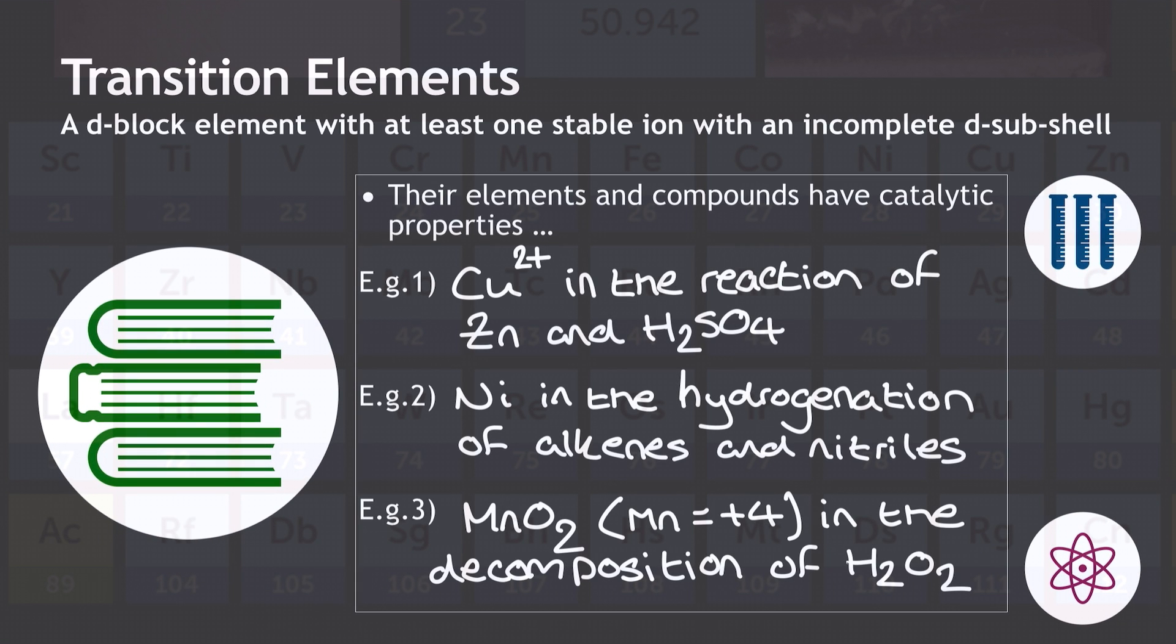We also need to be aware that for the transition elements, their elements and compounds, not just the elements themselves, actually have catalytic properties. Here are three I recommend you learn. First off, we've got the copper 2 ion in the reaction of zinc and sulfuric acid.